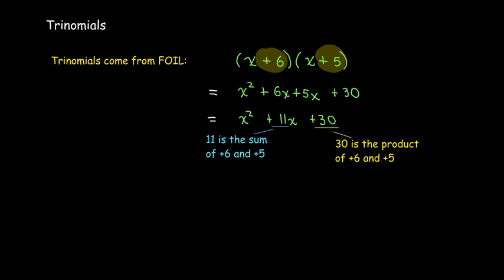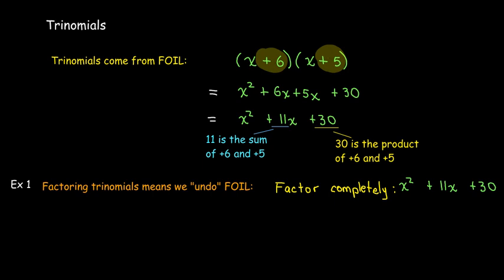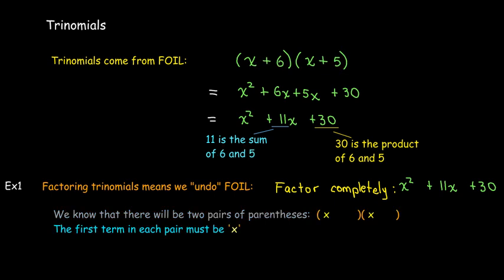So if I didn't know where this came from and I'd like to factor it — undo it — that means writing this trinomial as the product of two binomials. Because it's a simple trinomial starting with x², I know the first term in each binomial is x. The only question is what the second term in each set of parentheses is.